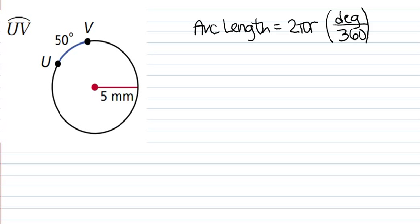So, we just substitute in. We have 2π, our radius here is 5. The degrees is 50.